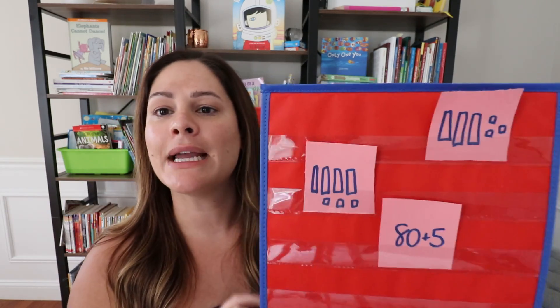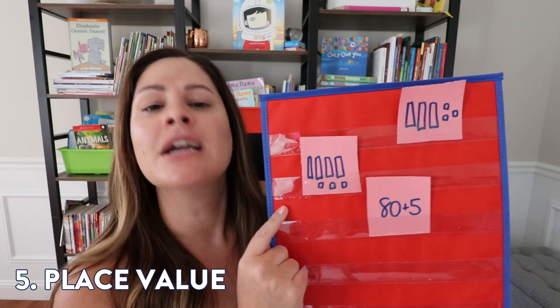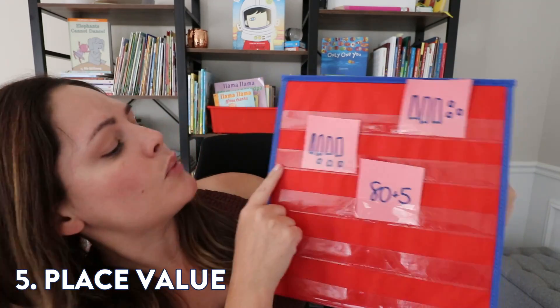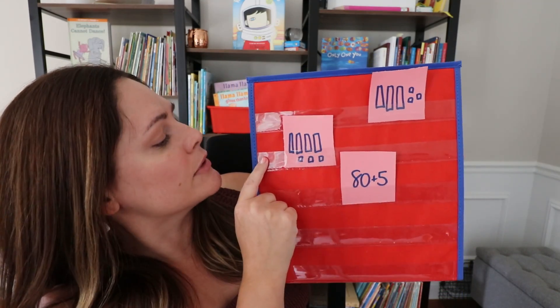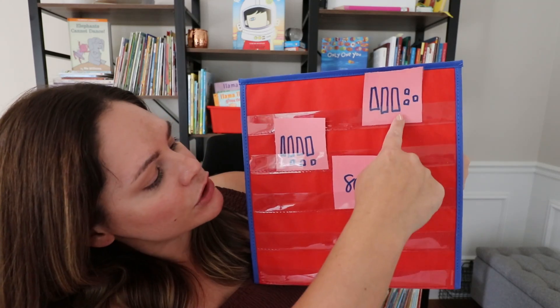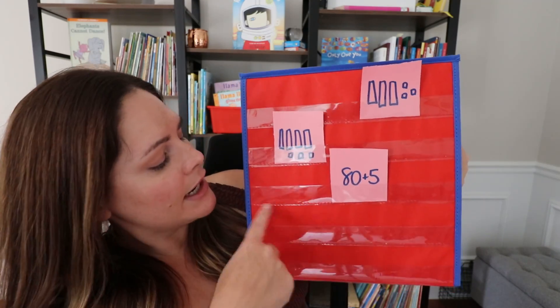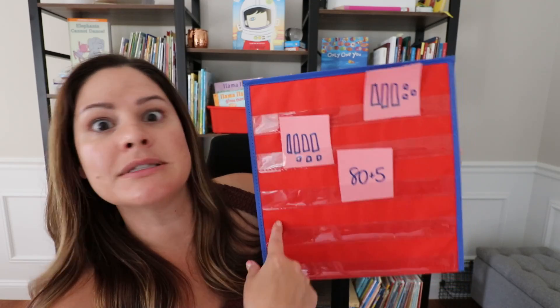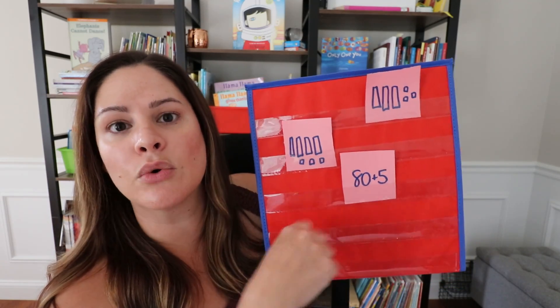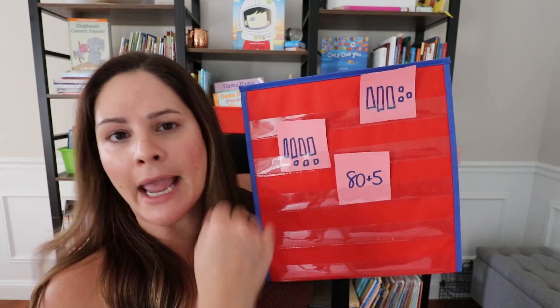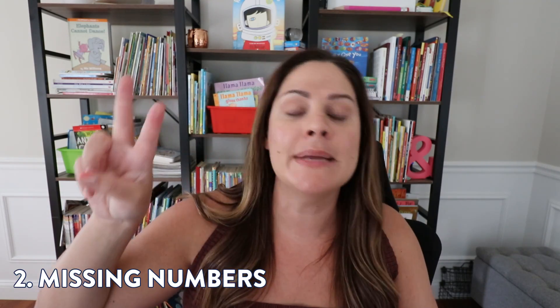The fifth skill is place value. I like to do this a couple of different ways — you can have drawings of base-10 blocks with ones and have students count up the number, so 43 and 33 for example. You could have expanded form, or just have the number 79 and they would have to tell you how many tens and how many ones there are in order to find the fish. A bunch of different ways to practice one skill! So to recap, the first five skills were all math ones: number identification, missing numbers, addition, subtraction, and place value.